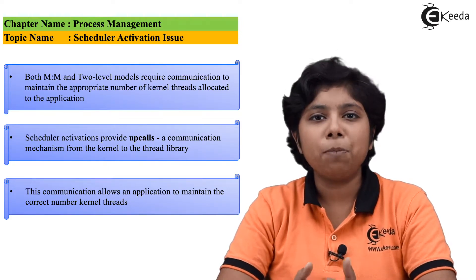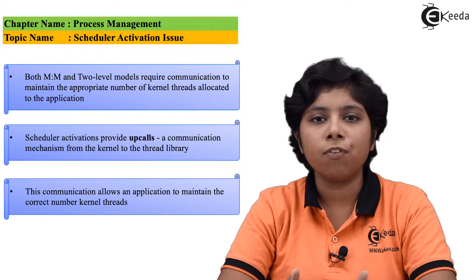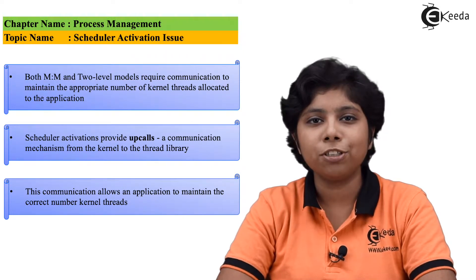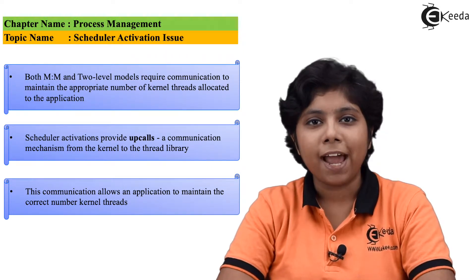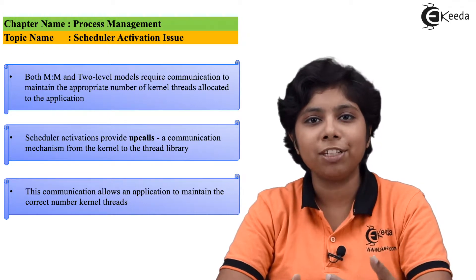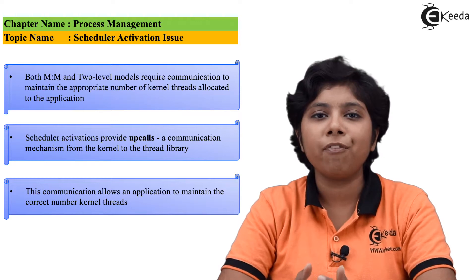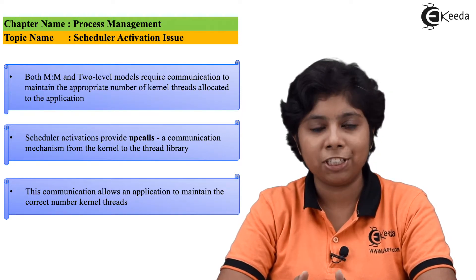If a kernel blocks — such as for IO completion or IO wait — then it also blocks the LWP, and up the chain it also blocks the user-level threads. An application may require any number of LWPs to execute its functions efficiently.